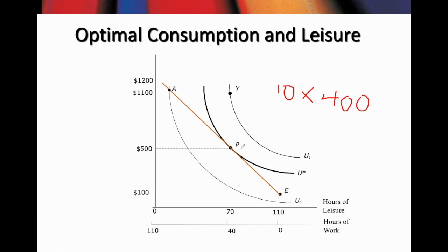To appreciate further why point P is the best decision, let's consider point Y. Is point Y more favorable than point P? The answer is yes, because point Y lies on a higher indifference curve U1 compared to U-star. A higher indifference curve indicates higher utility. However, the problem with point Y is that it is not attainable given the current wage rate — the worker is constrained by his budget line. Therefore, the optimal choice remains point P.